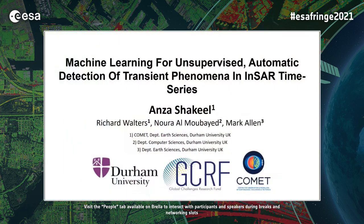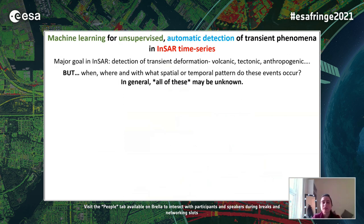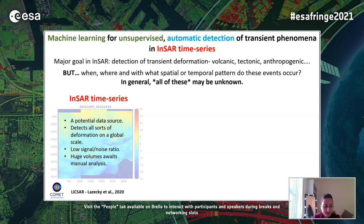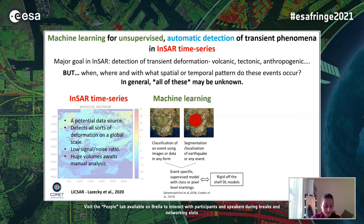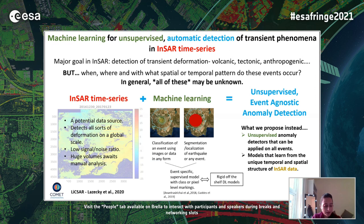I'm Anza from Durham, and I'm going to talk about machine learning for unsupervised automatic detection of transient phenomena in InSAR time series. InSAR is a valuable tool for detecting and measuring all sorts of deformation on a global scale caused by earthquakes, volcanoes, and landslides. This data has large volumes and low signal-to-noise ratio, making manual analysis not feasible, so demand for an automatic system is high. Machine learning is capable of learning from these complex data structures and has been used for classification and localization using off-the-shelf deep learning models. We take a completely different approach of unsupervised anomaly detection, where background noise is characterized as normal and rare events are flagged as anomalies.